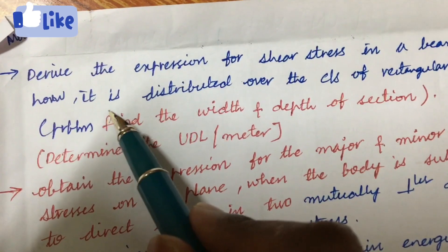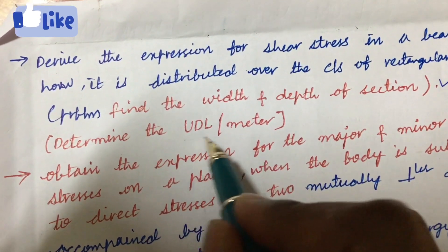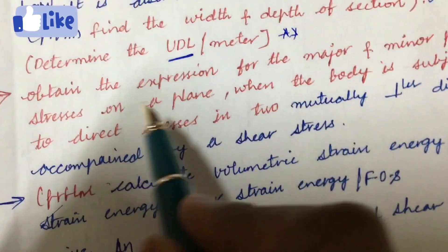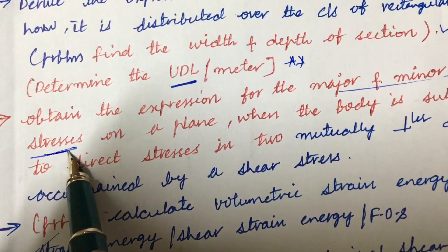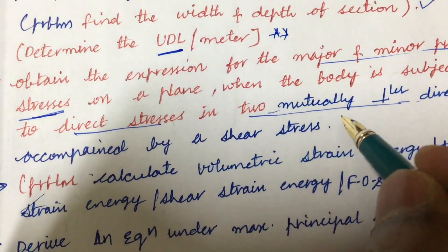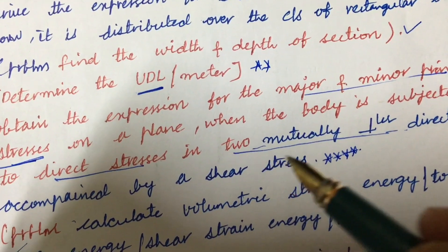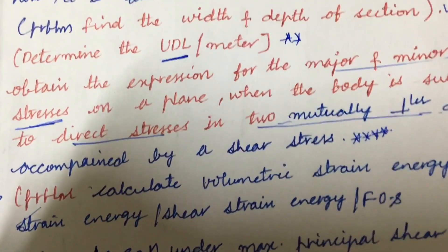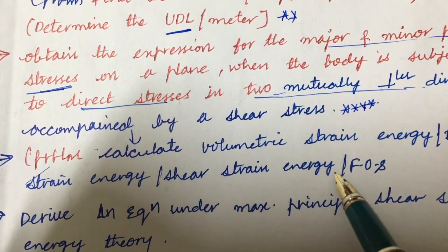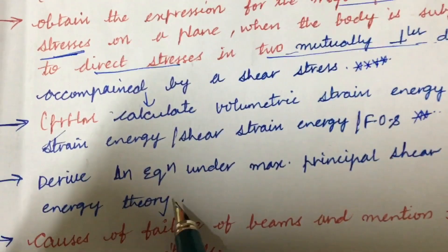You need to understand how shear stress is distributed over the cross-section of a rectangular beam. If a problem is asked, find the width and depth of the section and determine the UDL per meter — this may be a gunshot question. Another important question: obtain the expression for major and minor principal stresses on a plane when a body is subjected to direct stresses in two mutually perpendicular directions accompanied by a shear stress. Work out the expression and solve two to three related problems. You may also need to calculate volumetric strain energy, total strain energy, or shear strain energy and the factor of safety for a given beam or cross-section.